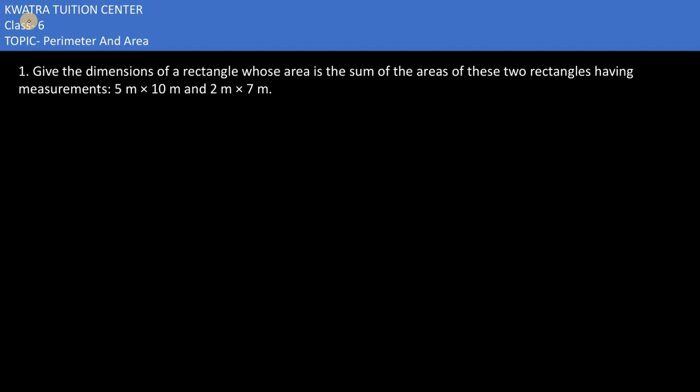Here in the next one it says give the dimension of a rectangle whose area is the sum of the areas of these two rectangles.